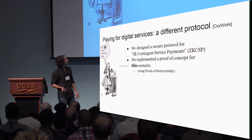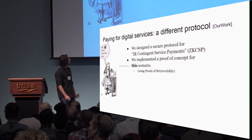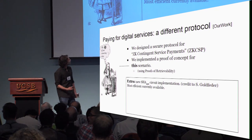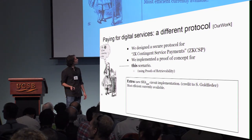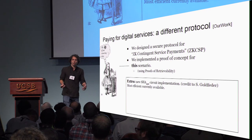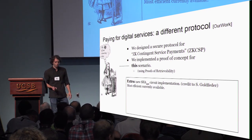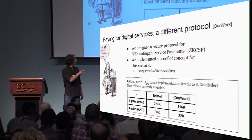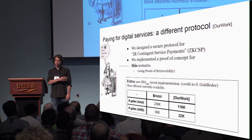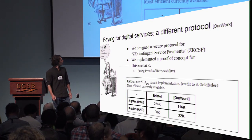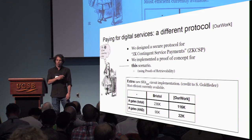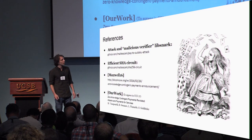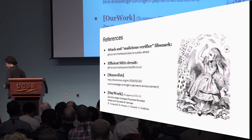So we designed and implemented a protocol we called service-contingent payments. We stumbled upon another contribution in that context: we needed a SHA-256 circuit implementation, and we built one that seems to be the most efficient available. To the best of our knowledge, the previous best implementation was by Bristol University from Nigel Smart's lab. If you're interested in this or any of the things I talked about, you can check out the links shown here. Thank you very much.